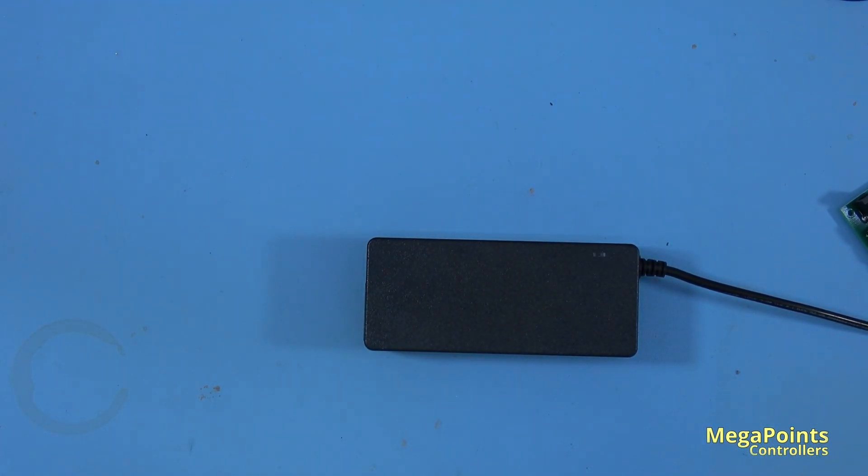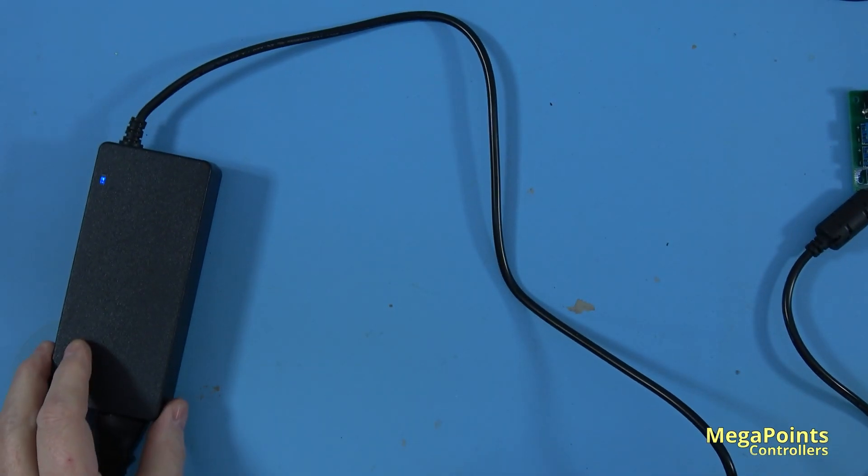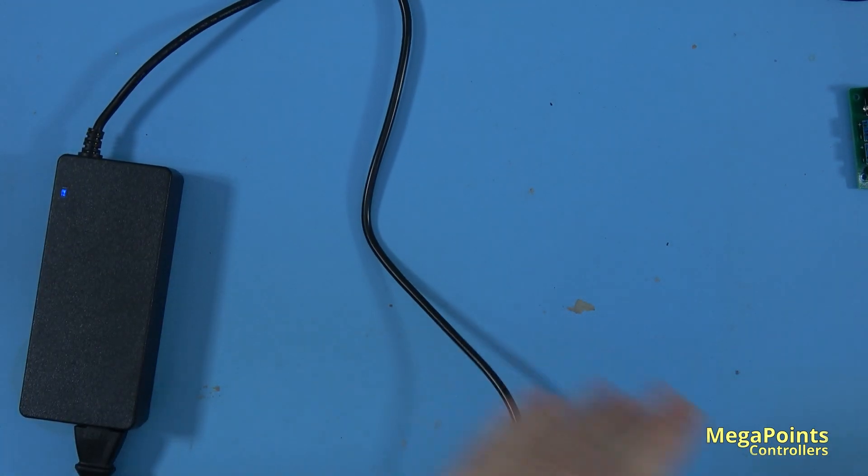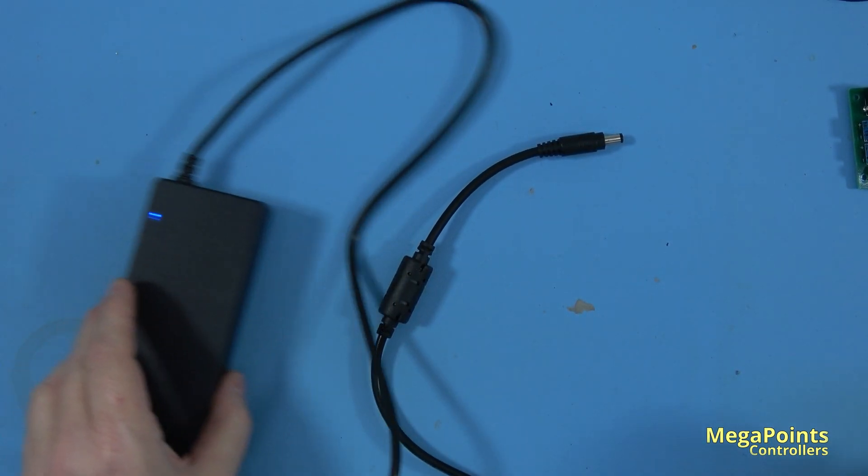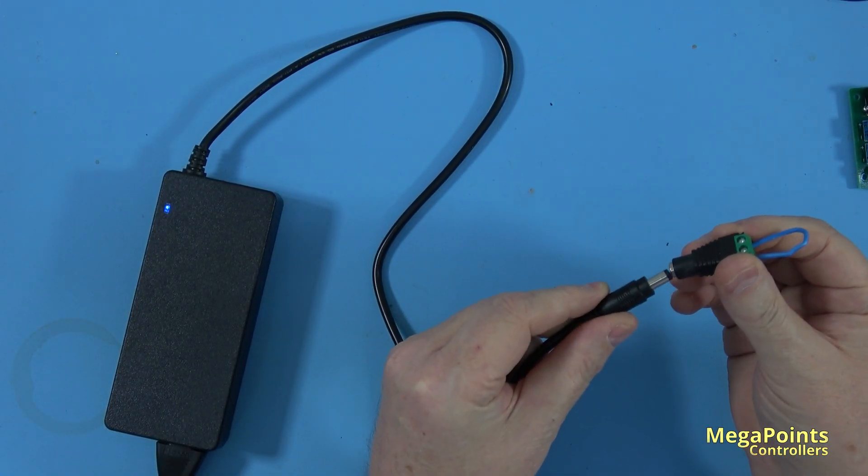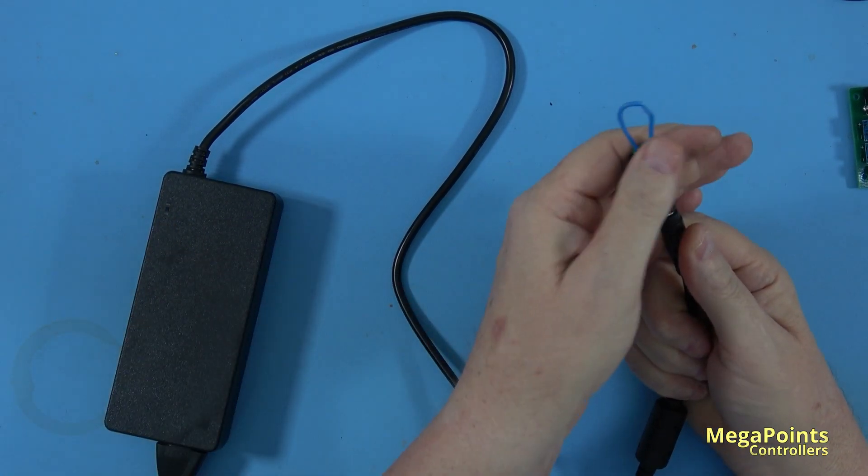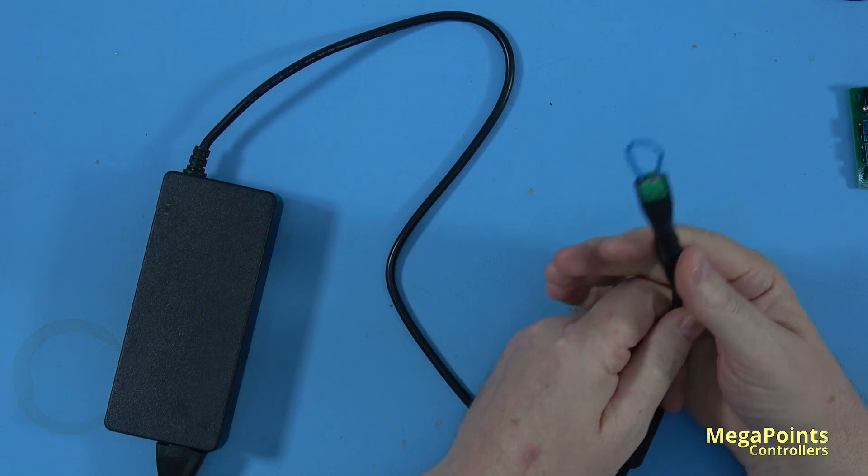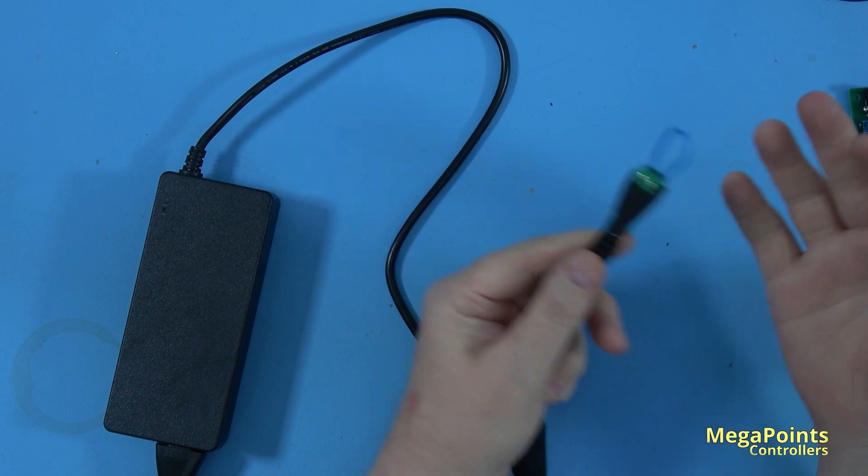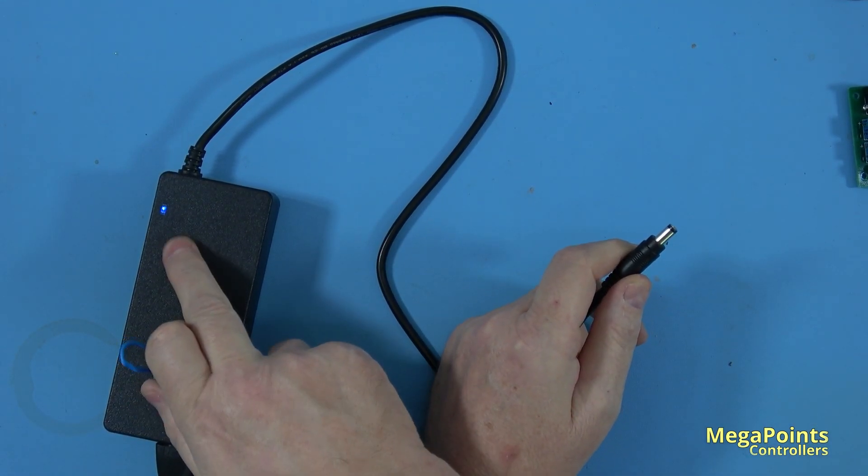First, I'll connect the mains power. The supply is now live with a blue light showing. I'm going to connect it to a short circuit. The light goes out—it's detected the short circuit and cut the power off. Nothing's getting warm, not even the short circuit. As soon as I remove it, the light comes back on.